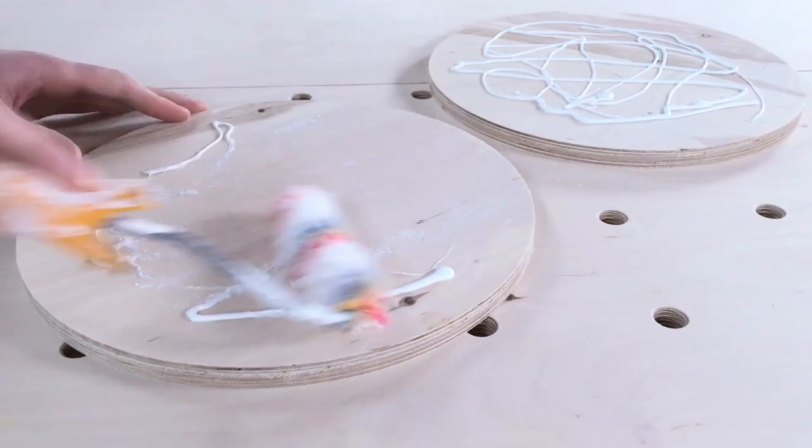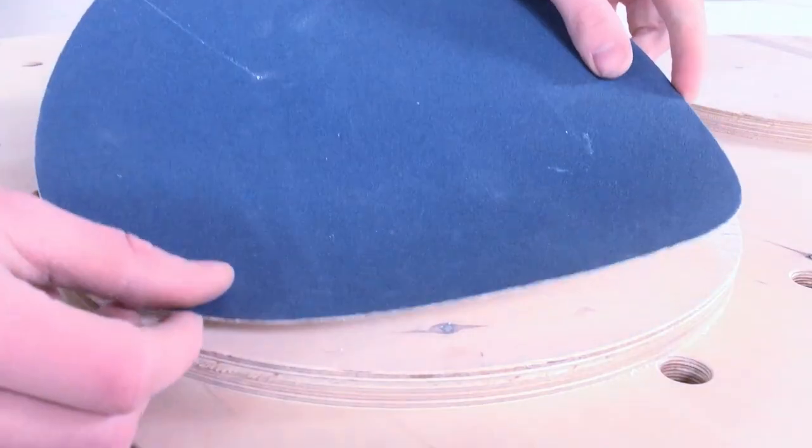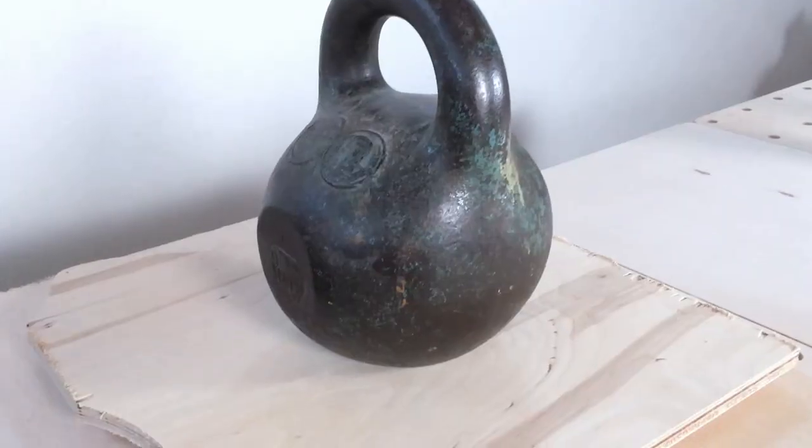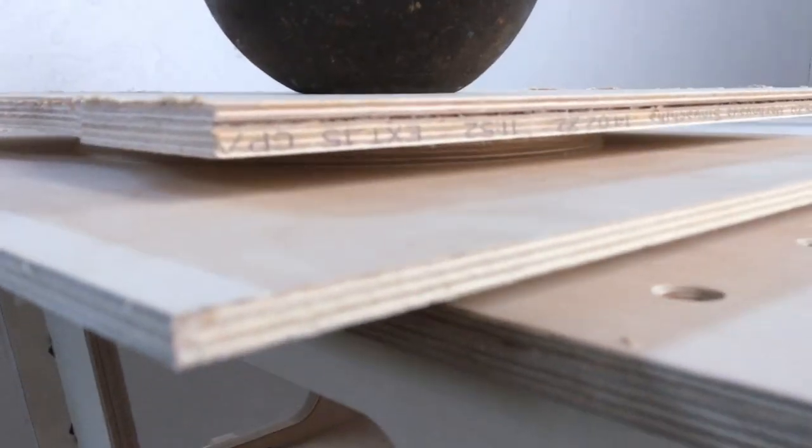I just have to glue the sandpaper to the plywood disc. For that I used PVA wood glue and kettlebell weights. Alright, now we wait. Just kidding.